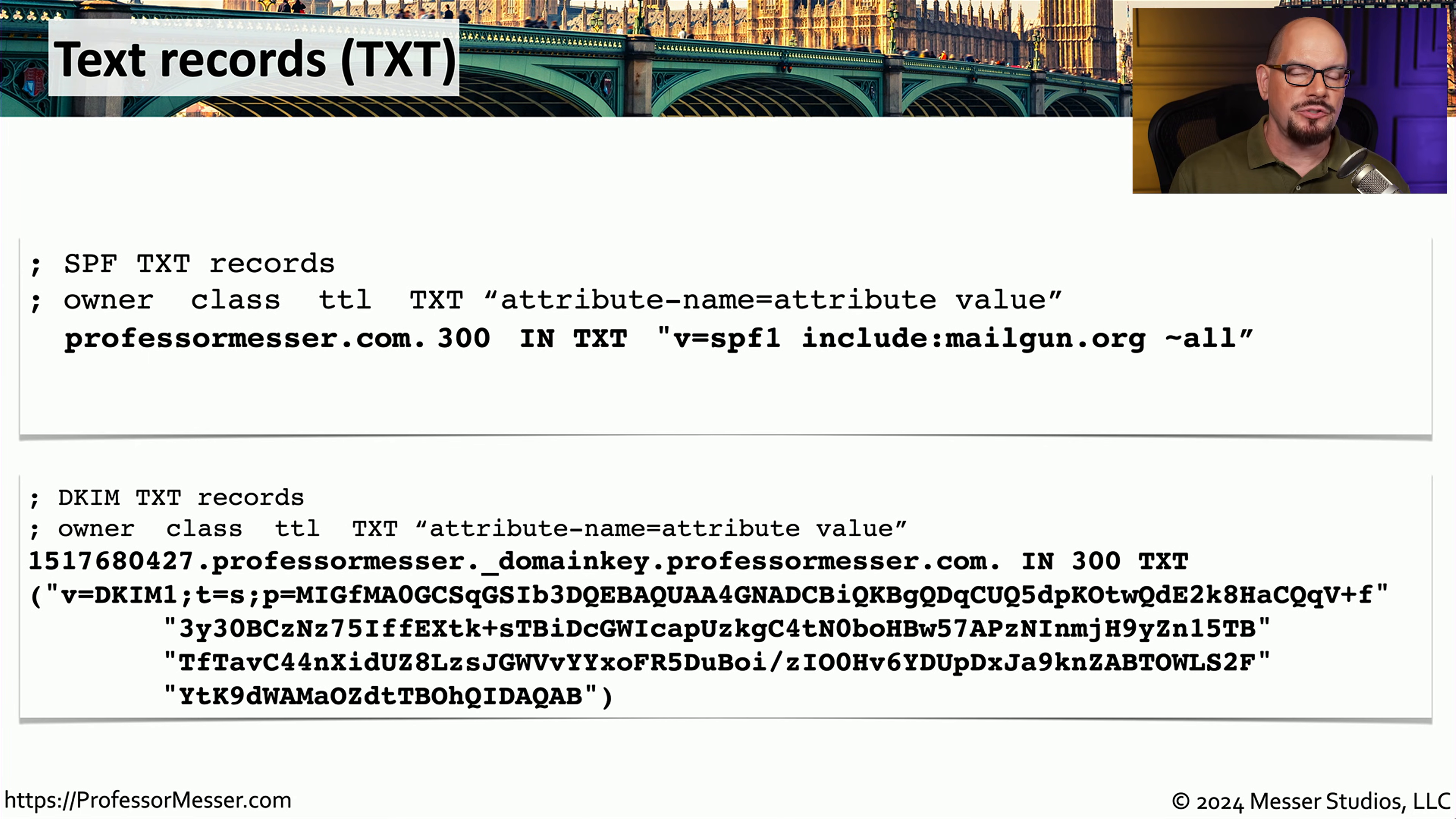Here is the SPF text record and the DKIM text record from my DNS server. The SPF record shows professormesser.com, and it shows a specific mail server that is allowed to send mail on my behalf. In this case, it's the mail server at mailgun.org. And of course, to verify the digital signatures, I also need a DKIM text record. You can see that this public key is quite long, but it is all text information, which makes it perfect to put inside of a DNS text record.